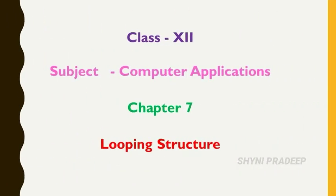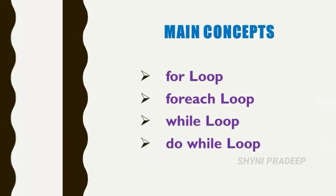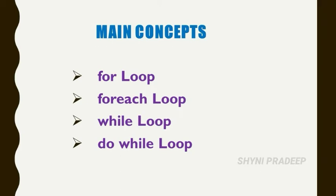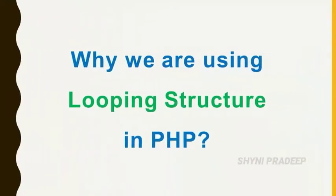Hi students, now coming to the next chapter, that is looping structure. In this session you are going to learn about four types of loops: for loop, for each loop, while loop, and do while loop. First, let us see what is looping structure and why we are using loops in PHP.